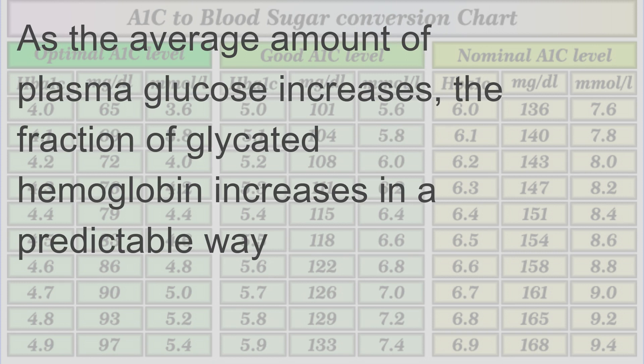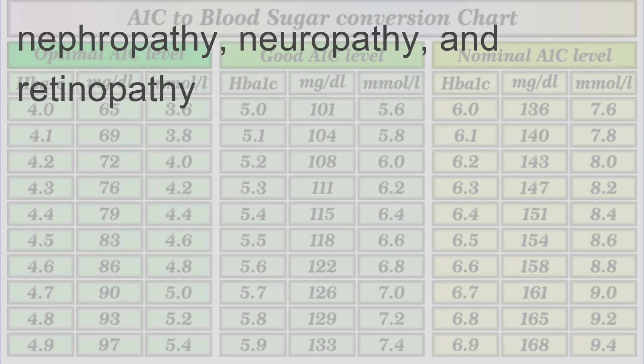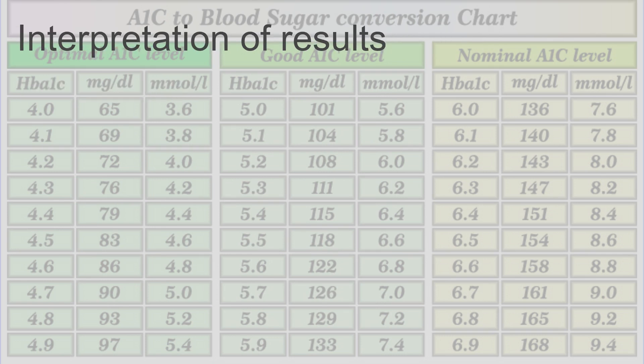As the average amount of plasma glucose increases, the fraction of glycated hemoglobin increases in a predictable way. In diabetes, higher amounts of glycated hemoglobin, indicating poor control of blood glucose levels, have been associated with cardiovascular disease, nephropathy, neuropathy, and retinopathy.